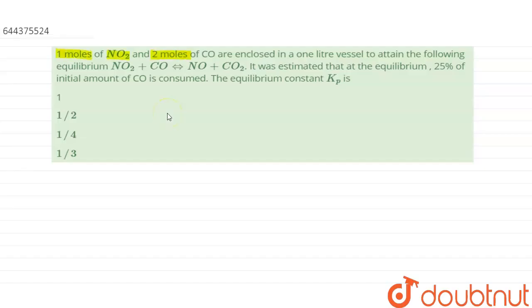One mole of NO2 and two moles of CO are enclosed in a one-liter vessel to attain the following equilibrium: NO2 + CO ⇌ NO + CO2. It was estimated that at equilibrium, 25% of the initial amount of CO is consumed.